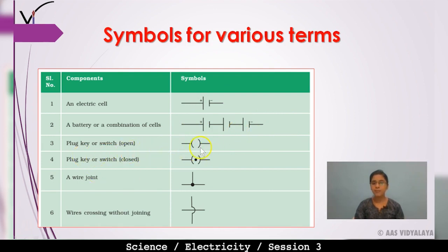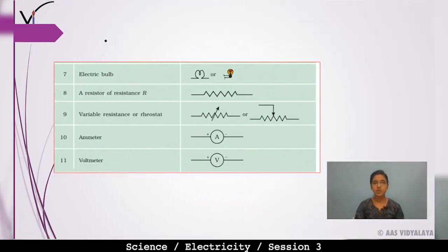For an open key, the symbol shows a gap in the circuit. For a closed key, the lines are joined — meaning current can flow. A wire joint is shown by a dot where two wires meet. Wire crossing without joining is shown by one wire going straight and the other drawn as a semicircle over it. The electric bulb has its own symbol. A resistor is shown in a zigzag way. A variable resistance has a zigzag symbol with an arrow over it. The ammeter is represented by the letter A, and the voltmeter by the letter V.